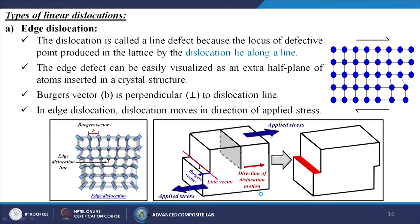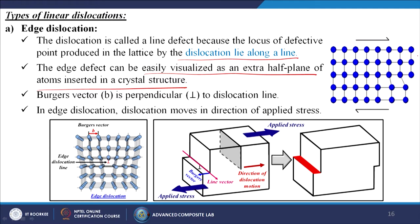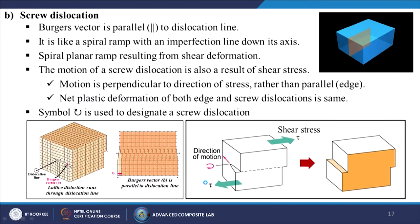Edge dislocation is a line defect where the locus of defective points lies along a line. It can be visualized as an extra half-plane of atoms inserted in a crystal structure. In the image, the extra half-plane is shown in red and it is shifting. The Burgers vector b is perpendicular to the dislocation line in the case of edge dislocation.